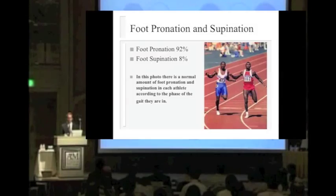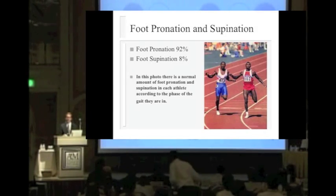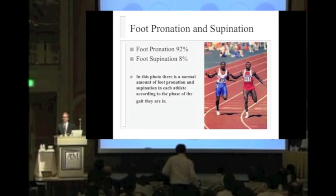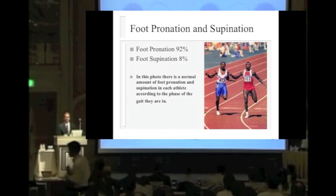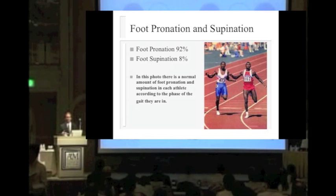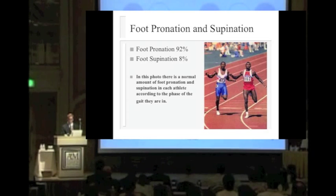There are two abnormal movement patterns: abnormal or over-supination, which only represents 8% of the population, and abnormal or over-pronation, which represents 92% of the population.